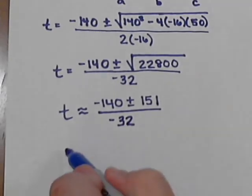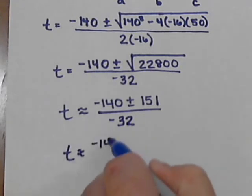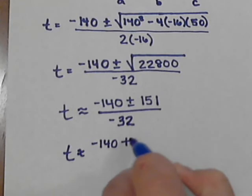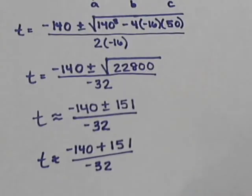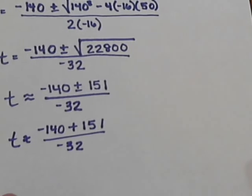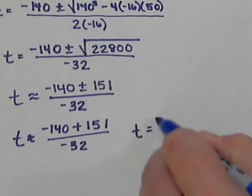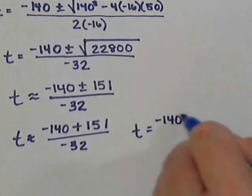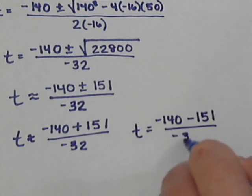The last step is we're just going to do these two parts. We're going to calculate negative 140 plus the 151 over negative 32. And then at the same time, we're going to calculate negative 140 and then do the minus the 151 all over negative 32.